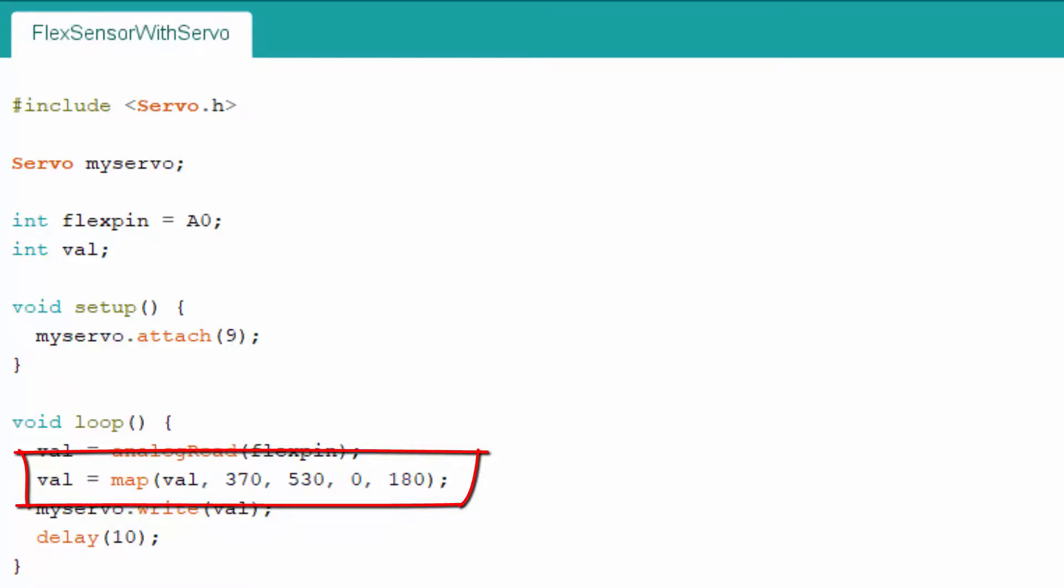For 370, it is 0 degree angle, and for 530, it is 180 degree angle. myServo.write will write flex sensor value and make angle rotation accordingly. 10ms delay is just for servo to get there.